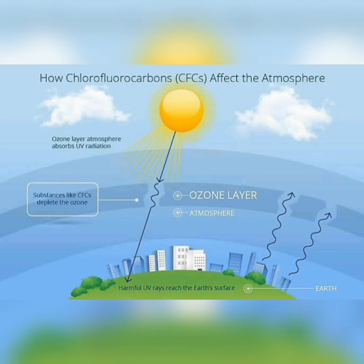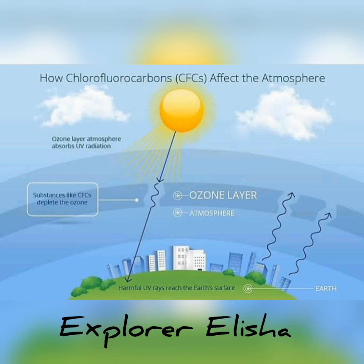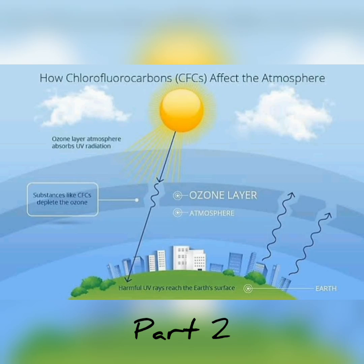Hi guys, welcome back to my YouTube channel Explorer Alicia. Let's explore the hole in the ozone layer, part 2. The ozone layer acts as Earth's sunscreen, absorbing about 98% of damaging ultraviolet, or UV, light. But the ozone layer has gotten thinner.